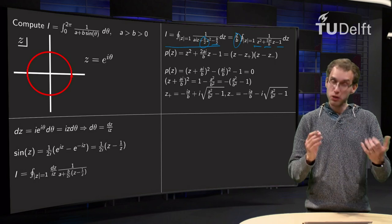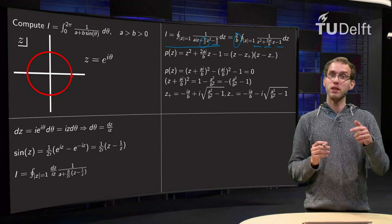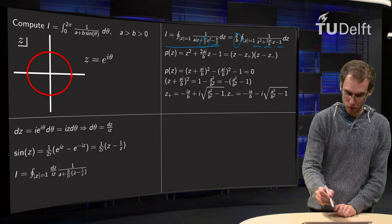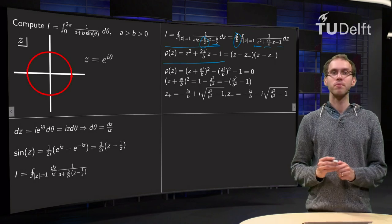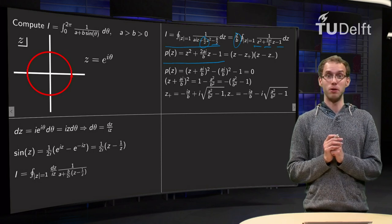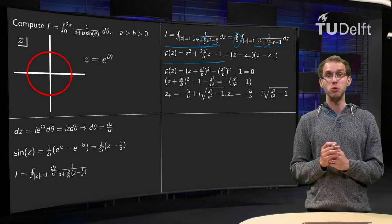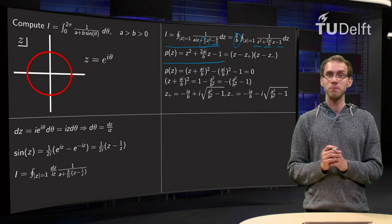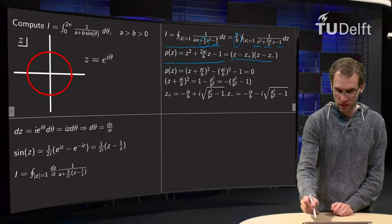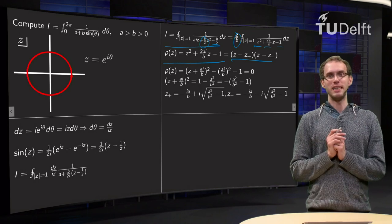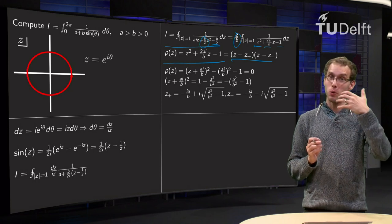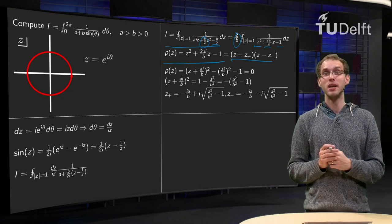So now we have an integral of the form 2 over b, integral 1 over some polynomial, and we define that polynomial as p of z. Well, it is a second-order polynomial, so we know it has two zeroes, and let us call those zeros z minus and z plus. Like this. Why do we want to do it like this? Well, we have to know where those zeros are.